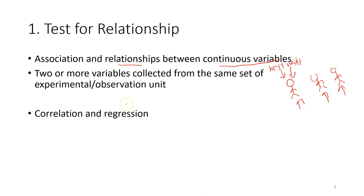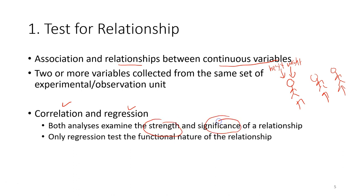For test of relationship we can use correlation or regression, and it depends on the characteristics of our variables and our research questions. Both analyses examine the strength and significance of the relationship. But only regression tests the functional nature of the relationship. They will give you the model, they will construct a formula.